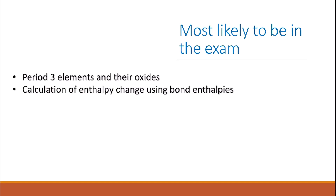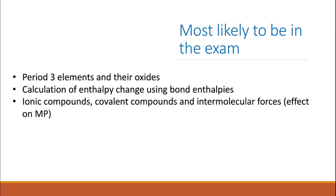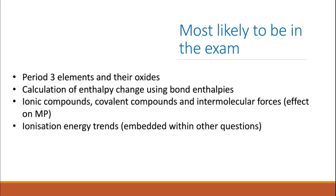Calculation of enthalpy change using bond enthalpies has been in the exam for quite a few years, so make sure that you know how to do that. Ionic compounds, covalent compounds, and intermolecular forces — and how these affect melting points — haven't been in the exam for quite a few years, so there will probably be a question about that this year. Ionisation energy trends will most likely be embedded within other questions; if they ask about Period 3 elements and their oxides, they'll probably also ask about the trend of first ionisation energy for Period 3 elements.